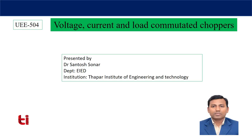Commutation is nothing but turning off a thyristor. In case of DC supply, natural reverse voltage is not coming to turn off the thyristor as we have seen in case of AC supply. So to turn off the thyristor we have to take help of some external circuitry. The circuit developed to turn off the thyristor is known as commutation circuit.